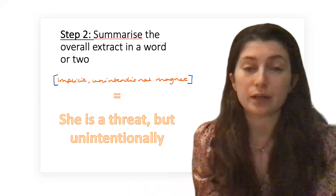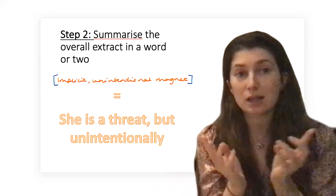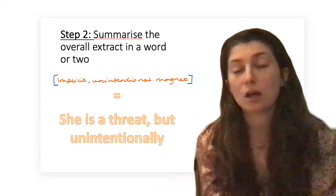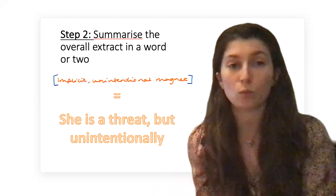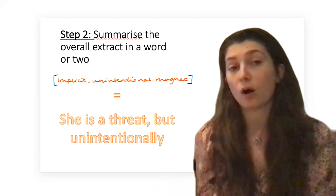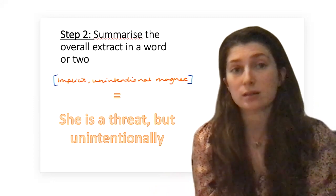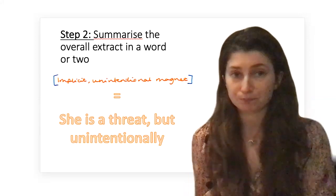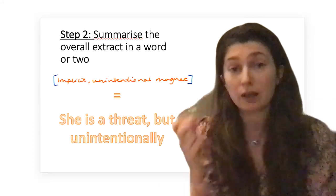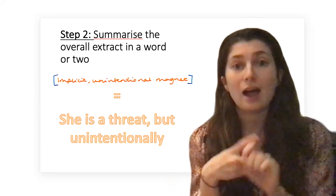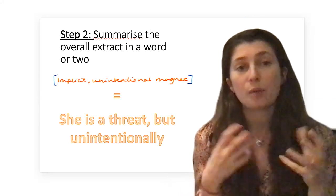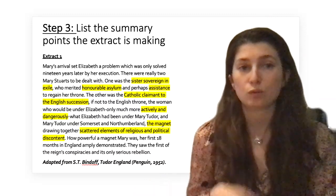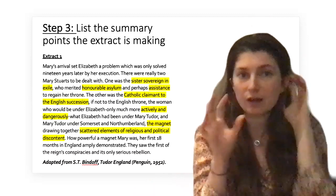I've highlighted these last elements because they're really important—the idea of Mary as a magnet, something which is going to unite the discontented, especially the catholic discontented. That's already making me think about the evidence I know that might match up here. Step two: think in a couple of words, as briefly as possible, what does this extract suggest about my question? What is Bindoff saying? I think he's saying she was a threat, but that threat was unintentional—she didn't actively pose a threat herself, it was just what she represented. I've summarized that as 'an implicit unintentional magnet.' In the exam I would write that phrase in big letters right next to the extract.